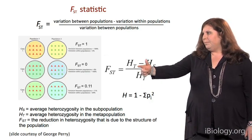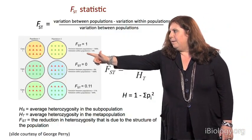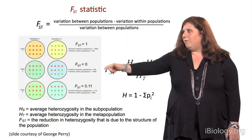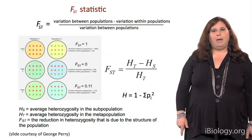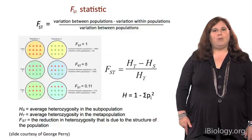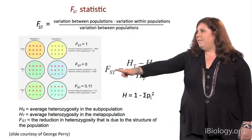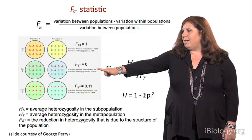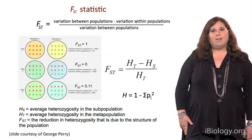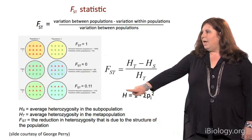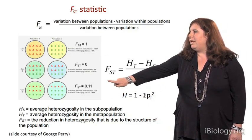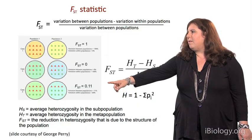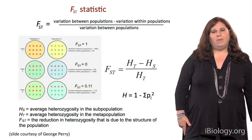Just as an example, in the case of FST equals 1, it means there is no overlap at all in the allele frequencies — population 1 has all A's and population 2 has all B's. In the case of FST equals 0, there is complete similarity, with exactly the same number of A alleles and B alleles. And here's an intermediate case with a value of about 11%, showing just a small amount of differentiation between two populations.